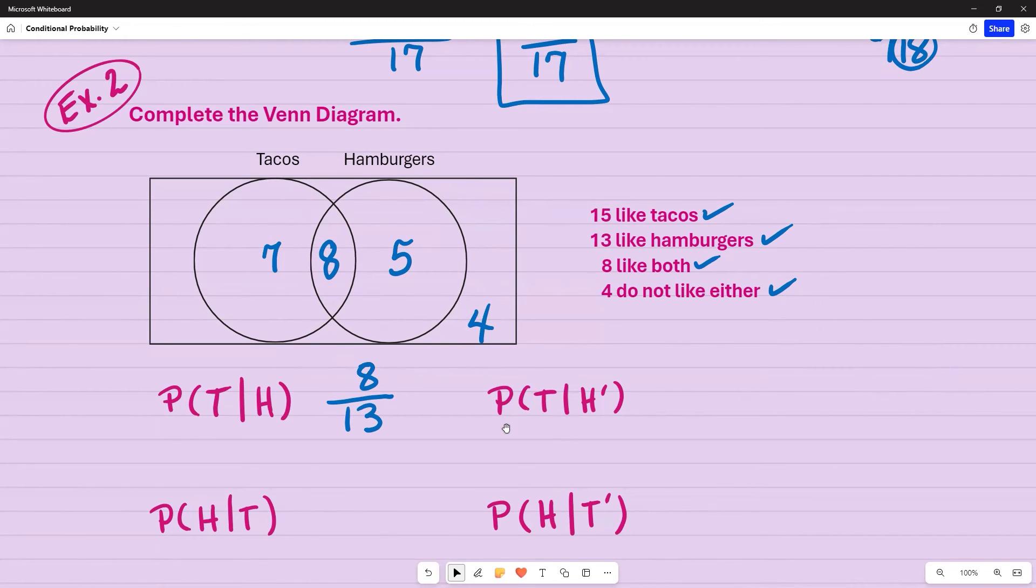This one is asking what's the probability of people liking tacos given that they do not like hamburgers. This time I am not choosing hamburgers as my total. I'm choosing everything else because this is where they do not like hamburgers. So this is included. So four as well as seven because these people only like tacos for a total of 11. So out of 11 people, how many people just like tacos? It's seven because remember these four, they don't like it either.